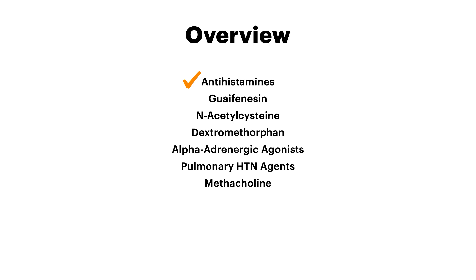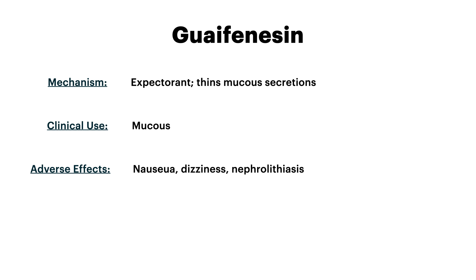One of the lower-yield medications I'll mention briefly is guaifenesin. Guaifenesin is an expectorant — it thins the mucus secretions and you use it in situations where there's too much mucus. Pretty straightforward, really nothing to know. The one adverse effect you might want to keep in the back of your mind is nephrolithiasis. Overall, this is a lower-yield medication and not necessarily something you should commit to memory.